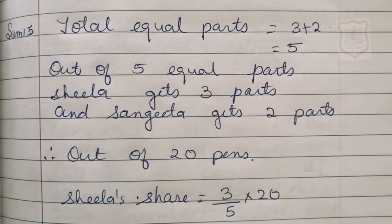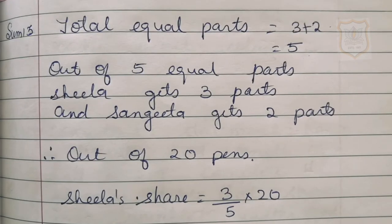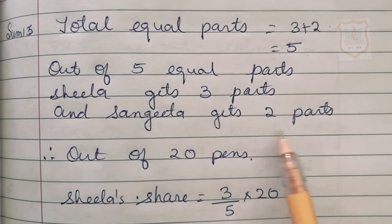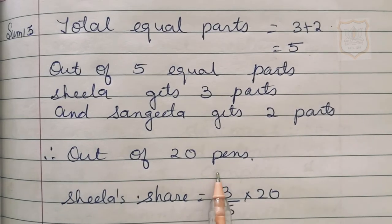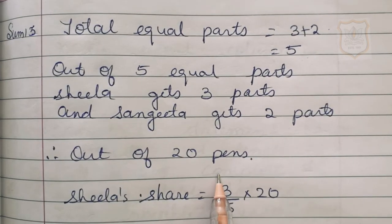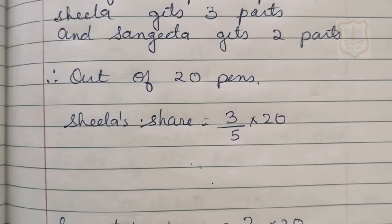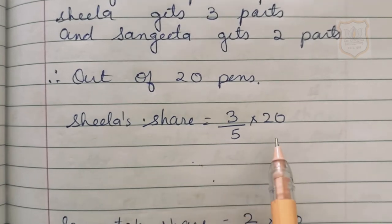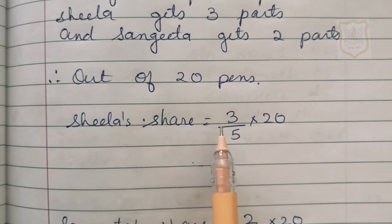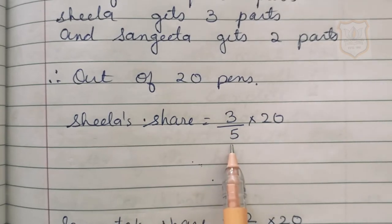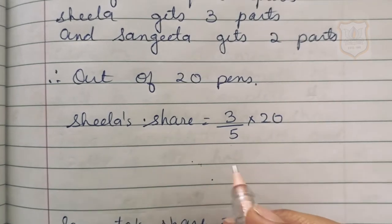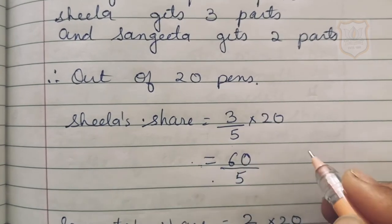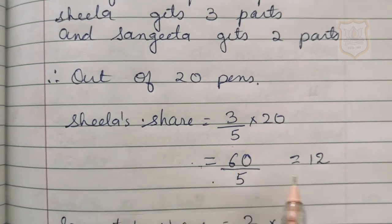As given in the question, we have to divide the pence between Sheila and Sangeeta in the ratio of 3 is to 2. So Sheila gets 3 parts and Sangeeta gets 2 parts. Out of 20 pence, Sheila's share is equal to 3 upon 5 multiplied by 20. So 3 multiplied by 20 is 60, and 60 divided by 5 is 12. So Sheila's share is 12 pence.